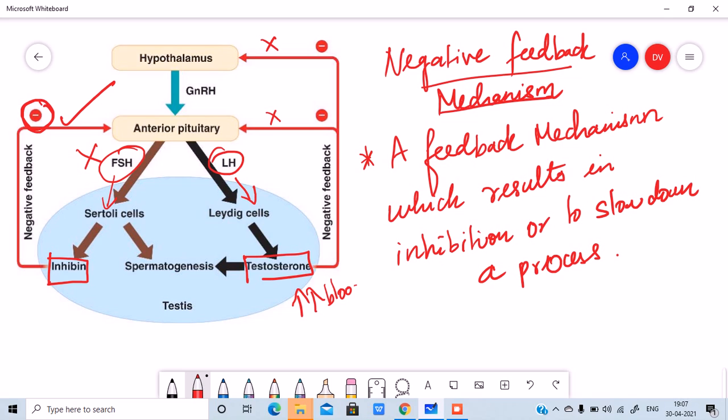The testosterone does this negative feedback first, and then again it goes to the brain and tells the hypothalamus itself, stop secreting GnRH, the gonadotropin releasing hormone. Stop doing that. Already enough testosterone is there in the blood. So it will go and inhibit the production of GnRH from hypothalamus as well. So these are negative feedback mechanisms happening.